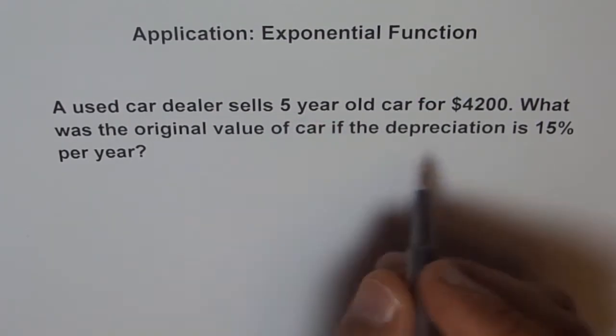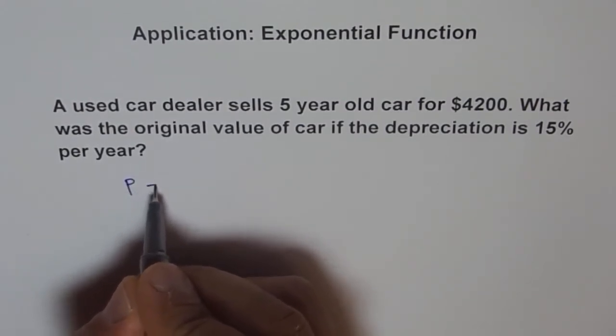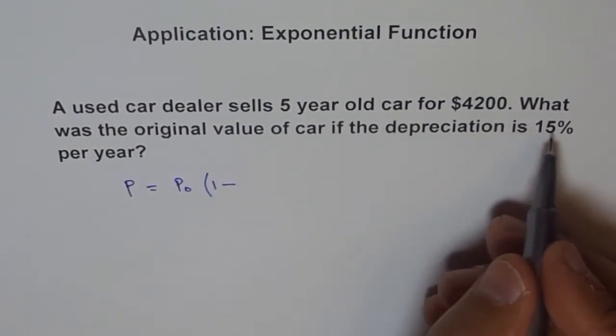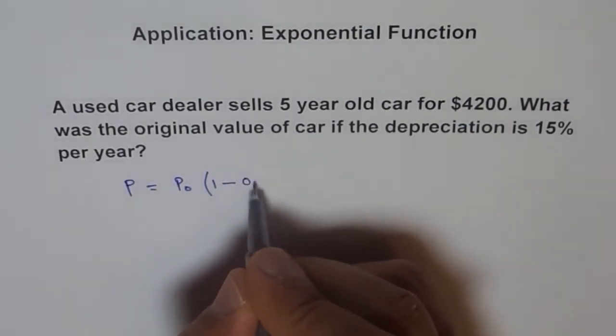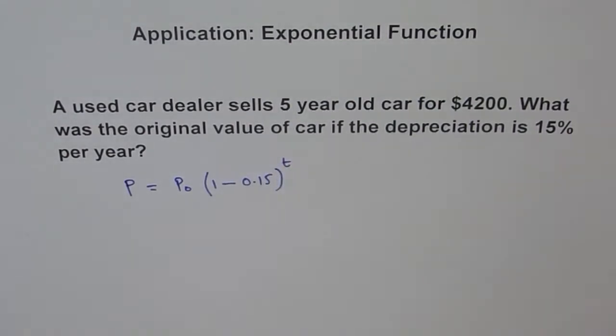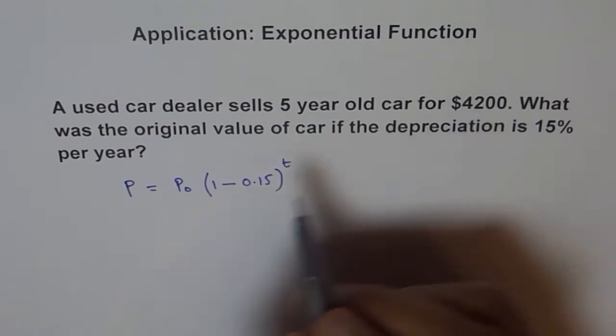For the exponential function, the formula is P = P₀(1 - 0.15)^t. Now here we know the final amount at which the car has been sold.